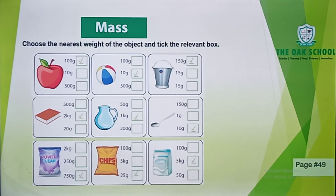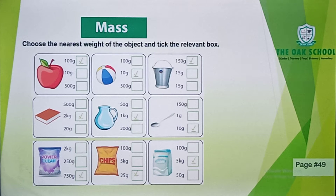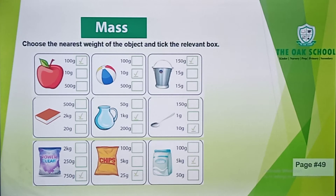There are many different objects. First, we have an apple. The apple has three weights: one is 100 grams, one is 10 grams, and one is 500 grams. The nearest weight of the apple is 100 grams, so you also want to tick the same box.